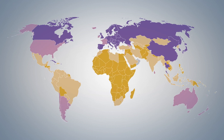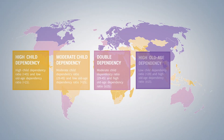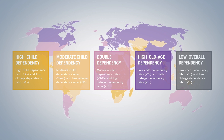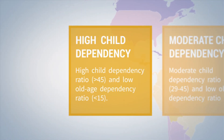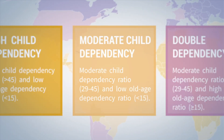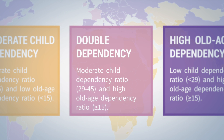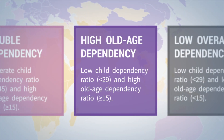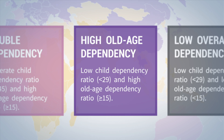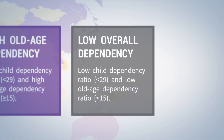By monitoring these ratios over time, we can get a sense of the policy needs a country may have as their population age structure changes. We have classified countries into five age structure categories based on the combination of their child and old age dependency ratios: high child dependency, moderate child dependency, double dependency, high old age dependency, and low overall dependency.